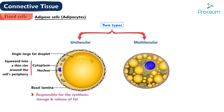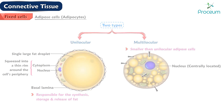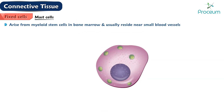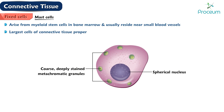Multilocular adipose cells are smaller than unilocular adipose cells; fat is stored as many small fat droplets and thus the spherical nucleus is centrally located. Mast cells arise from myeloid stem cells in bone marrow and usually reside near small blood vessels. These cells are one of the largest cells of connective tissue proper. They possess a central spherical nucleus, and their cytoplasm is filled with coarse, deeply stained metachromatic granules.